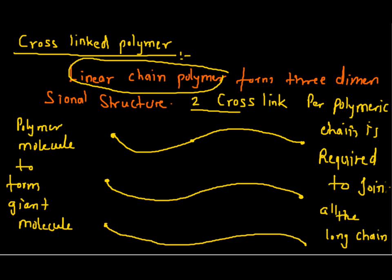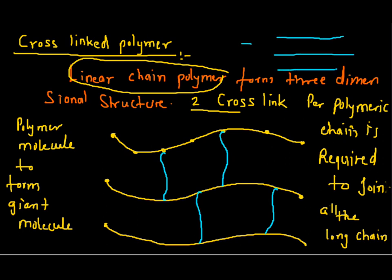This structure is made up of so many monomeric units, so we need to provide cross-links among them. This is the cross-link — at least two cross-links are required, and even more is possible. Then it forms a long joined molecule. In simple language, there should be cross-linking between the linear chains, and such type of polymer is called a cross-linked polymer.